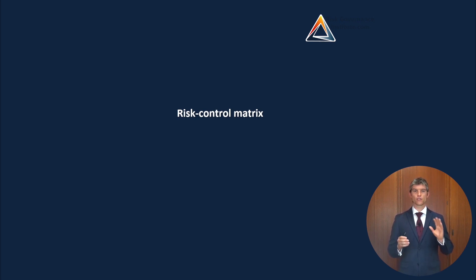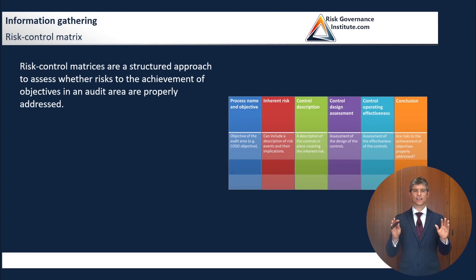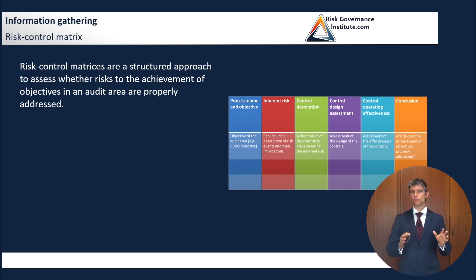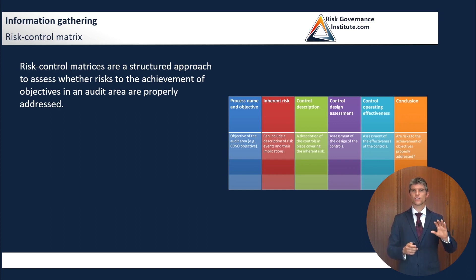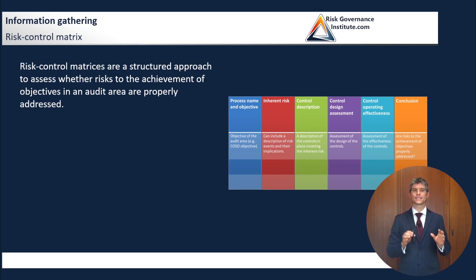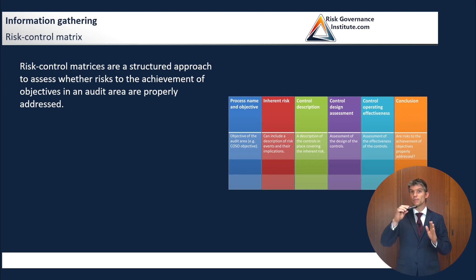We're now looking at risk control matrices. You'll see that it is very similar to what we have under an audit program, and they can often be used interchangeably. But a risk control matrix is a kind of audit program where you are really trying to start with an understanding of objectives of a certain process, and especially you are doing a whole assessment on the risks, often directly within this matrix itself. So that distinguishes it from more generic audit programs that might list a bunch of different tests to perform but might not have that link to the risks.